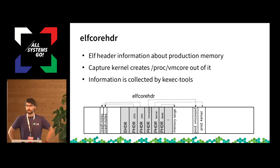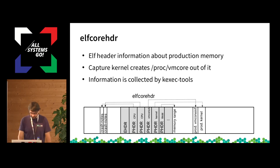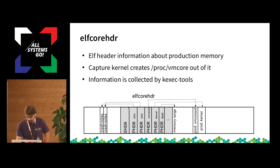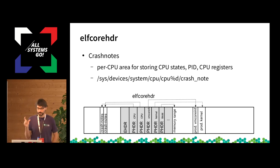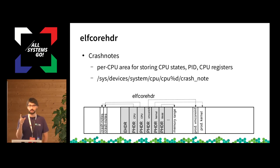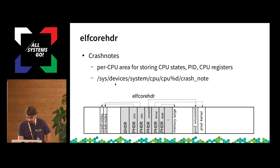The ELF core header is the core part of kdump — it tells the capture system where the production system's memory is. It's an ELF header with different program headers pointing into the production system's memory. It lives in the reserved memory area. The first program headers are for each CPU, called crash notes. A crash note is a small region of memory in the production system reserved per CPU, so that when a CPU crashes it writes its register state there — letting you find out the state of every CPU at crash time.